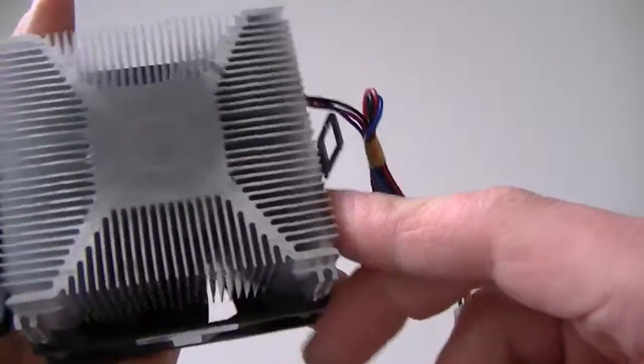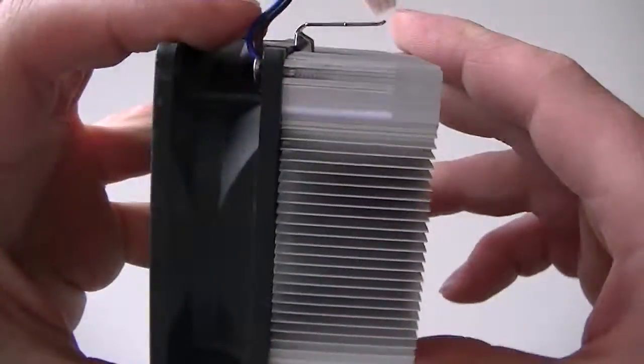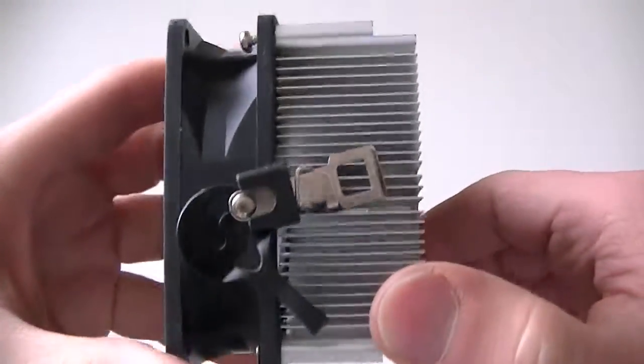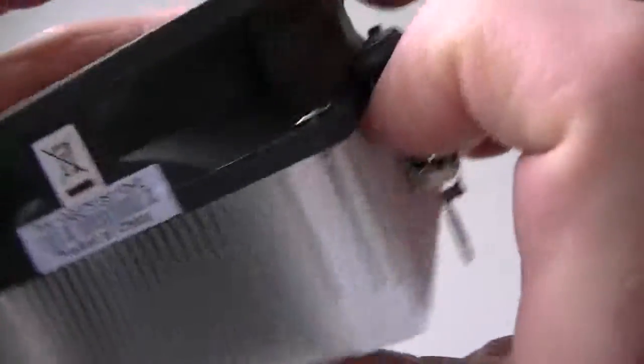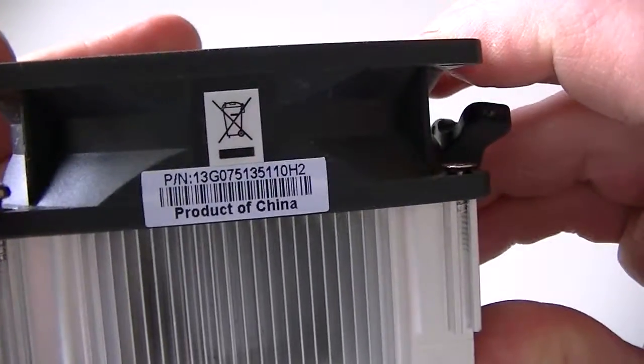It's a socket you can use on AM3, Socket AM2 Plus, or AM2 for quad core or dual core CPUs. And where's the model? Yeah, that's the model of the heatsink fan here: M-Ltech.